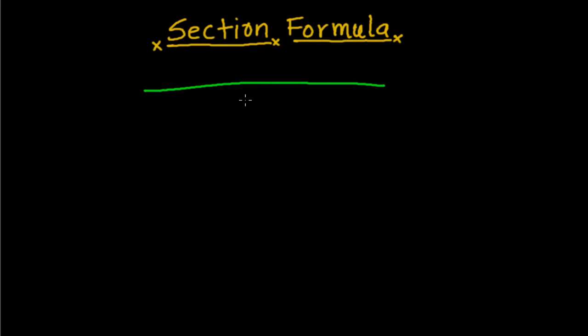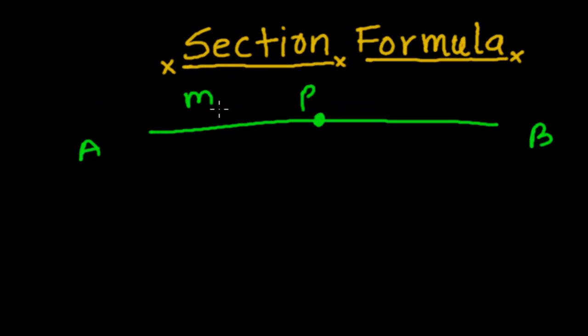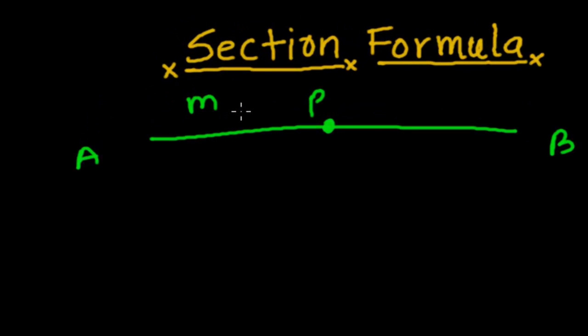This is a line, suppose AB, and here is a point P. If this point P is dividing this AB line in the ratio of m1 and m2, and suppose the coordinates of A are x1 and y1.